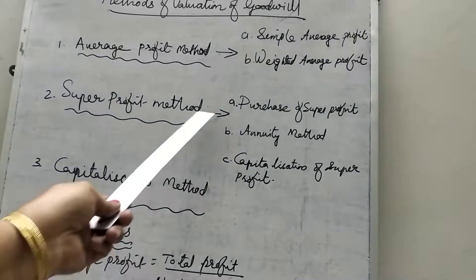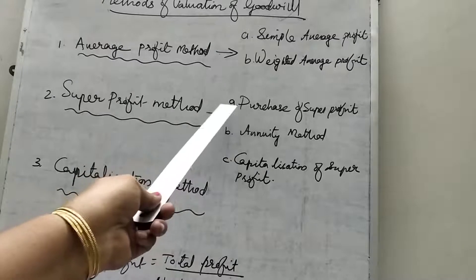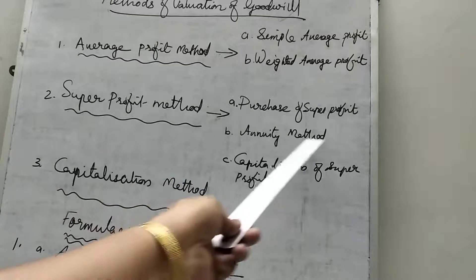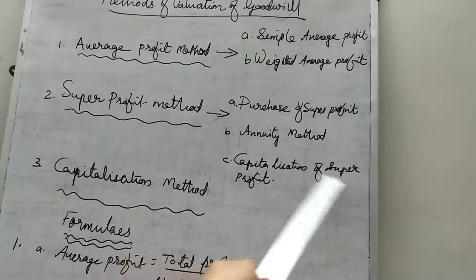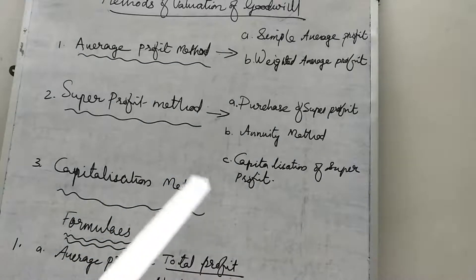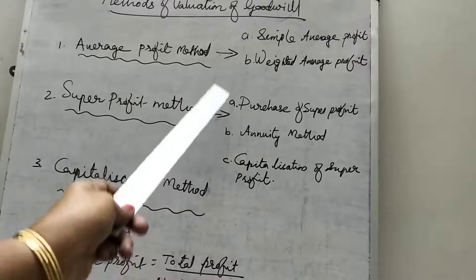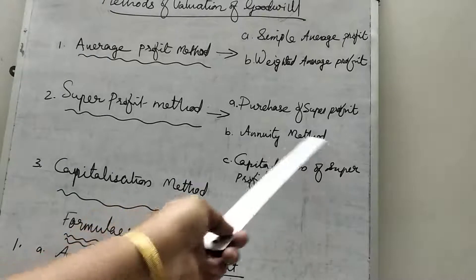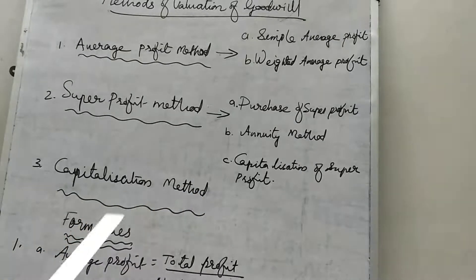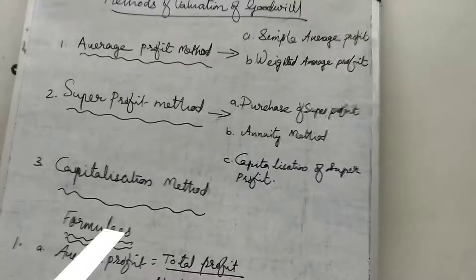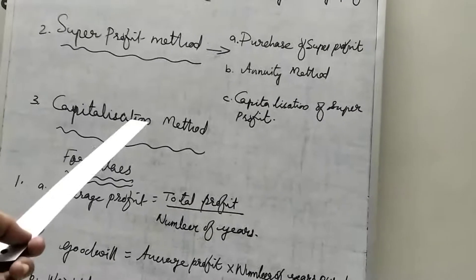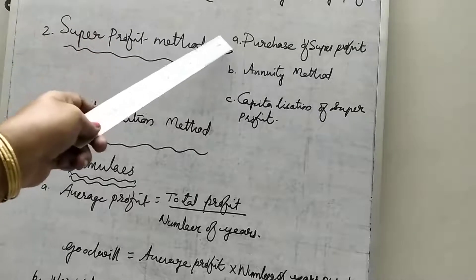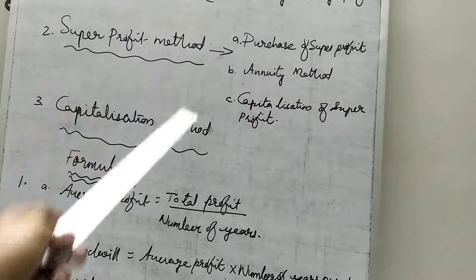The second one is the super profit method. Under super profit methods of valuing goodwill, there are three sub-methods: the first is the purchase of super profit method, the second is the annuity method, and the third is the capitalization of super profit method. The third overall method is the capitalization method, and there is no subdivision under the capitalization method. Based on these three methods, we are going to find out the value of goodwill.